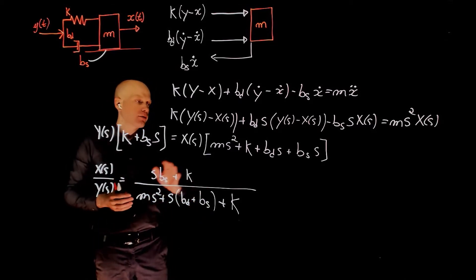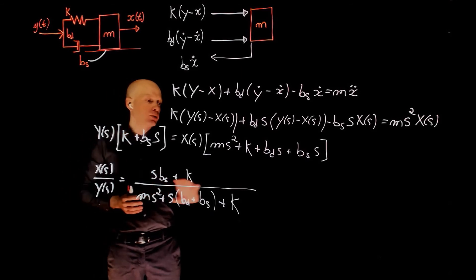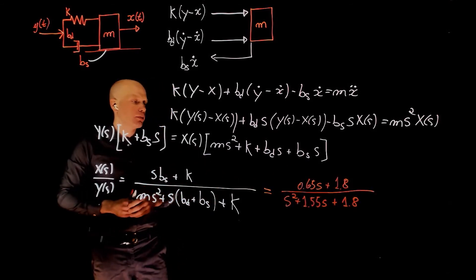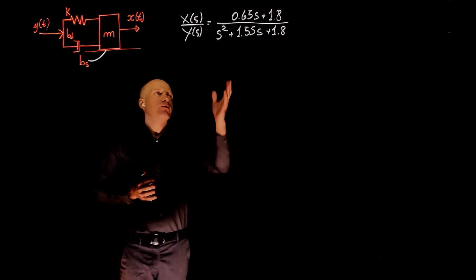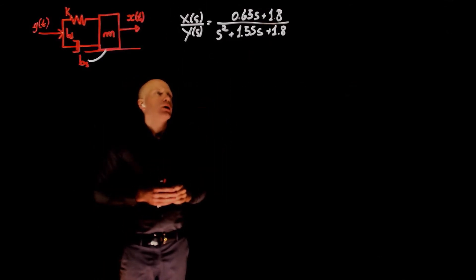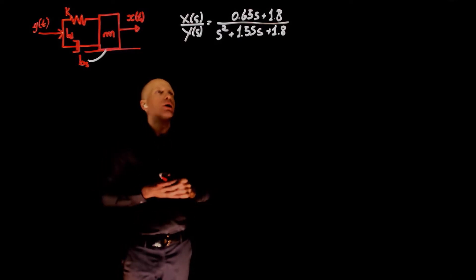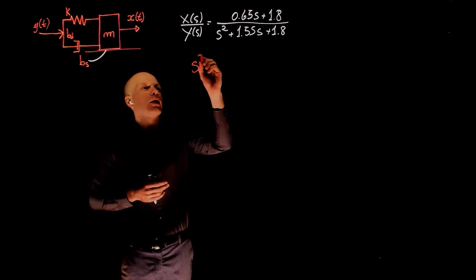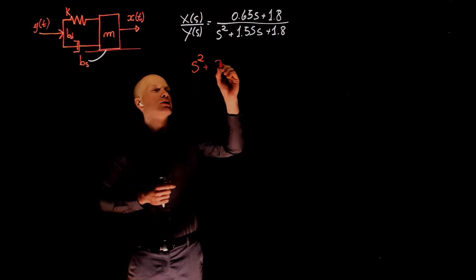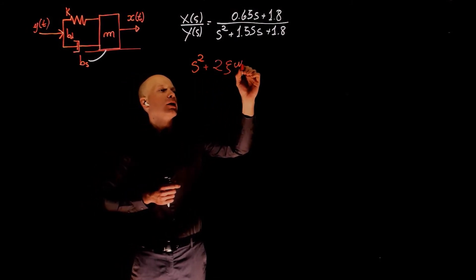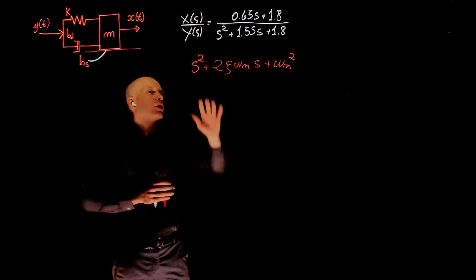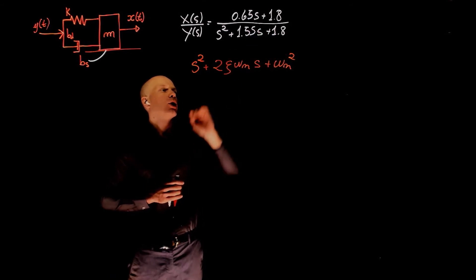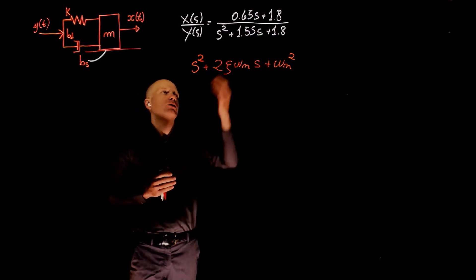By replacing the numerical values given in the problem, we can rewrite the transfer function numerically as shown here. Having the numerical values of the transfer function allows it to be written in the standard form. And the standard form for a second order transfer function is given as s squared plus 2 zeta omega n s plus omega n squared. This is the standard form in the denominator of the transfer function. There is no standard form for the numerator.